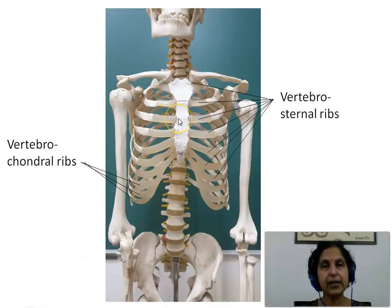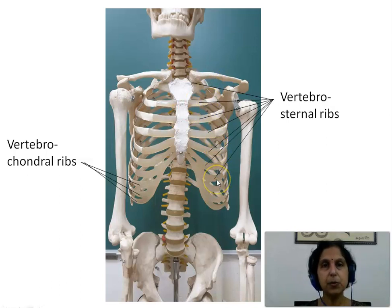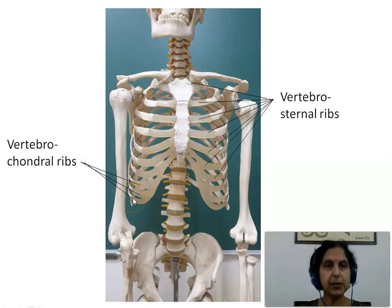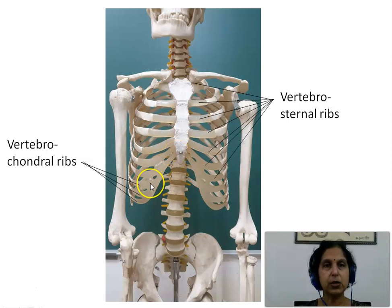What we see here again is the anterior view of the bony skeleton. We see the 1st to 7th ribs, which are the true ribs also classified as vertebro-sternal ribs. The 8th, 9th, and 10th ribs are connected by their costal cartilages to the costal cartilage of the rib above and do not connect to the sternum — so they are vertebro-chondral.